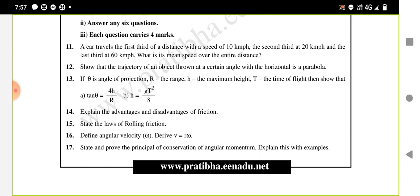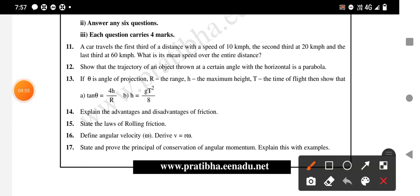Another one: the angle of projection is given, range is given, height is given, time of flight is given. The relation is T squared equals 4HR, and H equals GT squared by 8. You need to prove that maximum height H equals GT squared by 8.